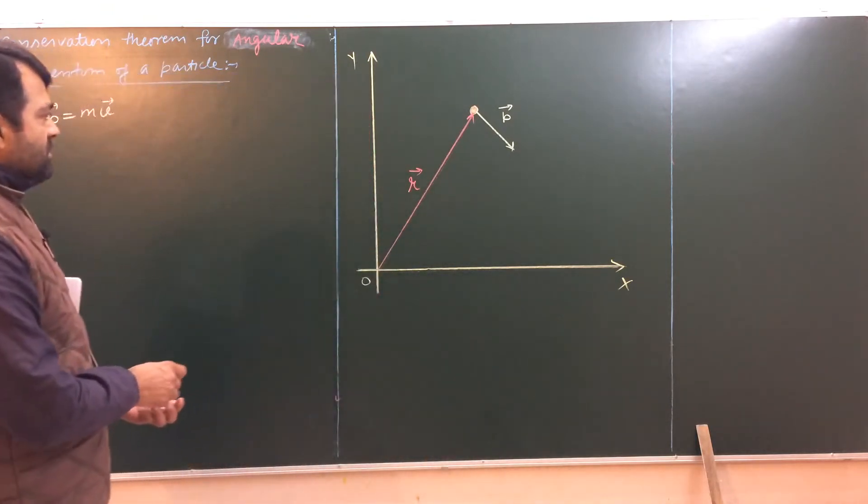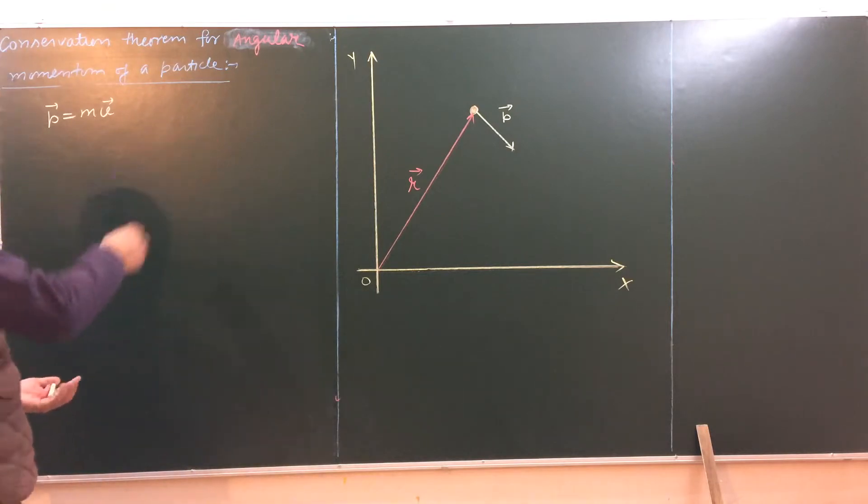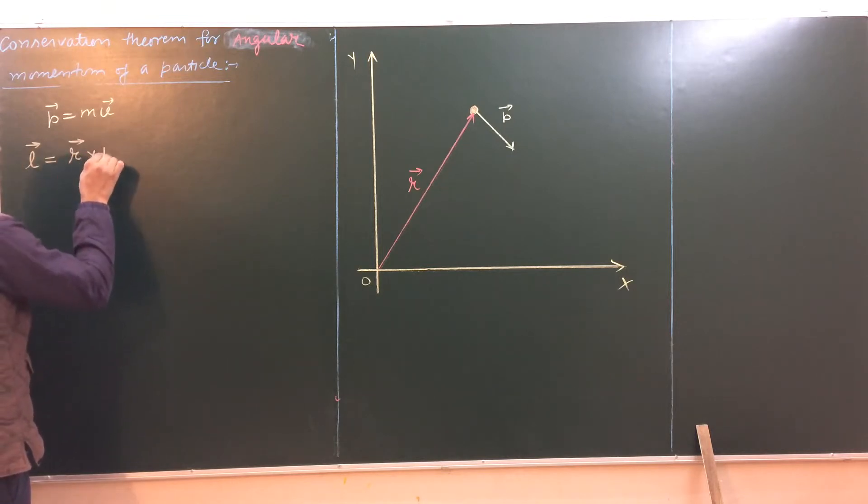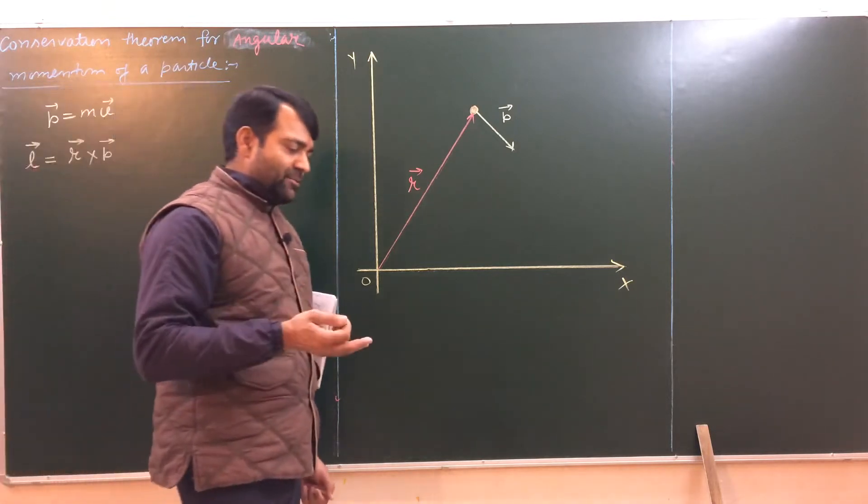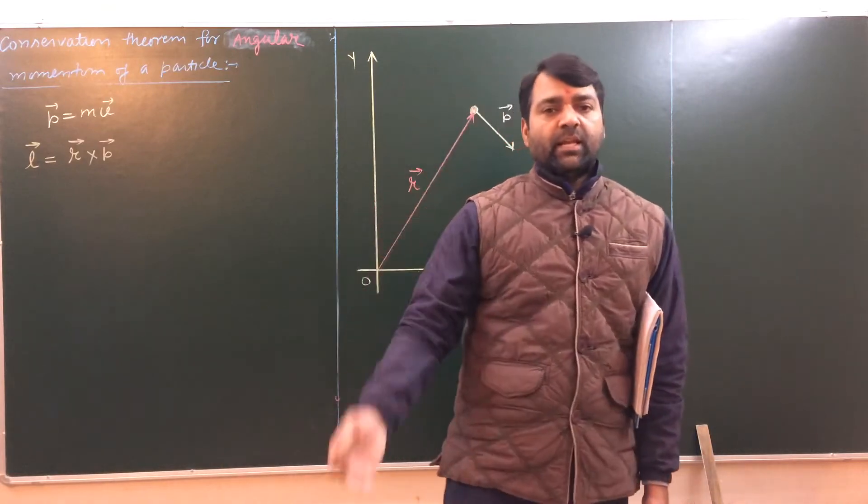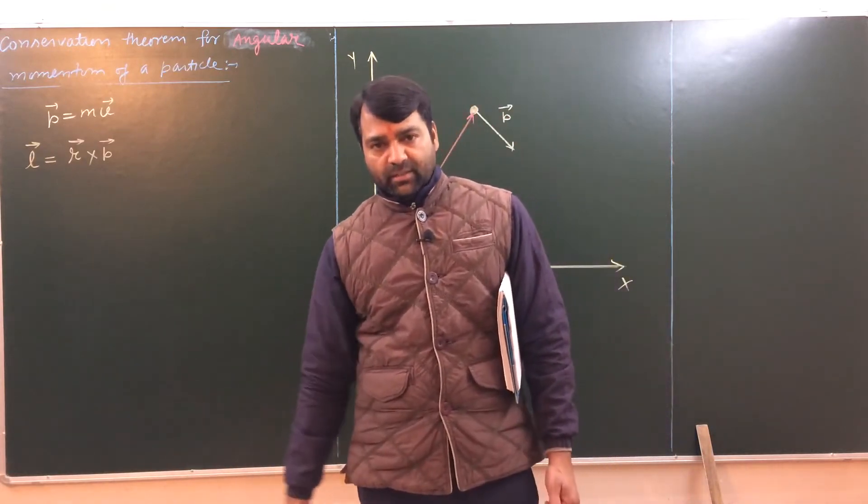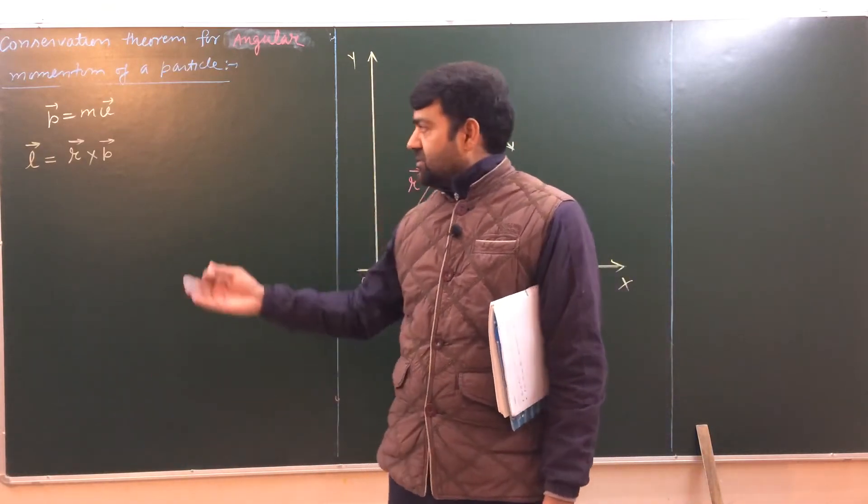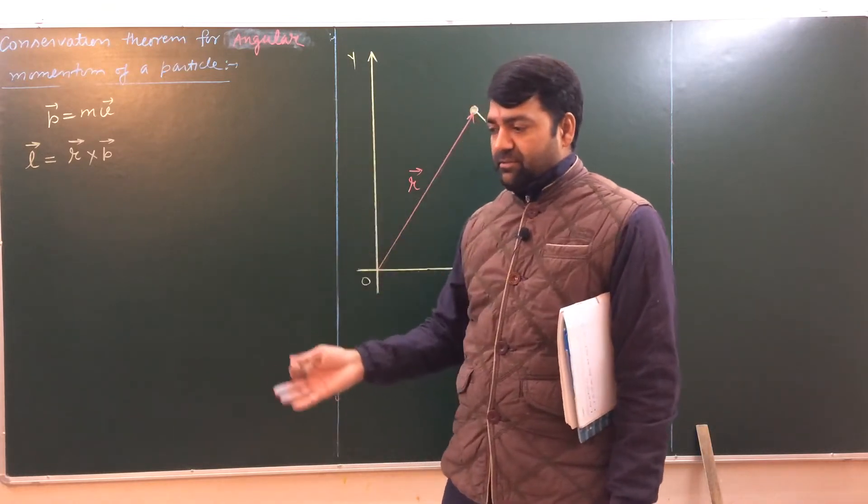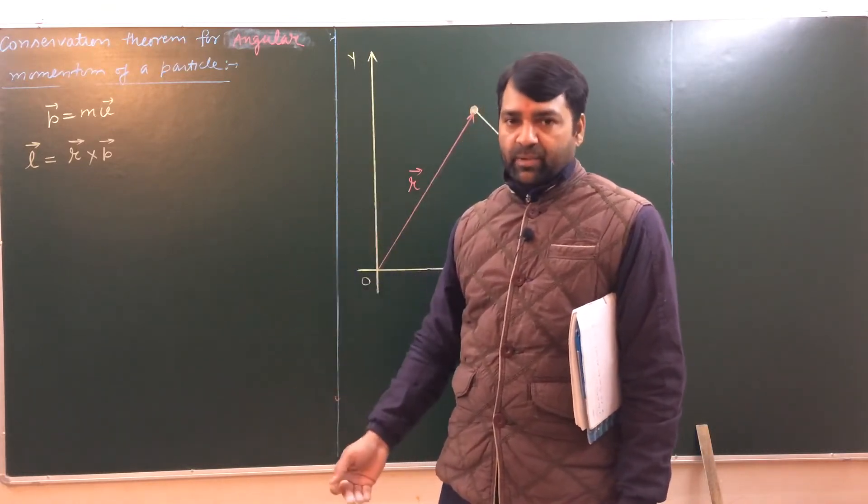Then angular momentum is a quantity which is defined for this particle in this way. Angular momentum is lower case l is the cross product of position vector of this particle and the linear momentum. This is lower case l. You might have also encountered angular momentum with upper case L. That is for a system of particles, which is the topic which we are going to discuss after we finish this mechanics of a particle.